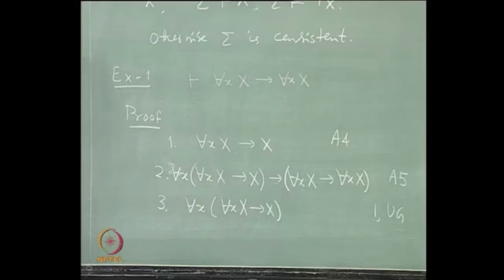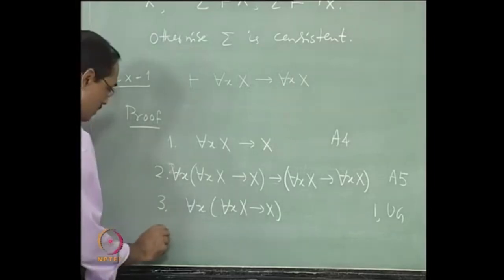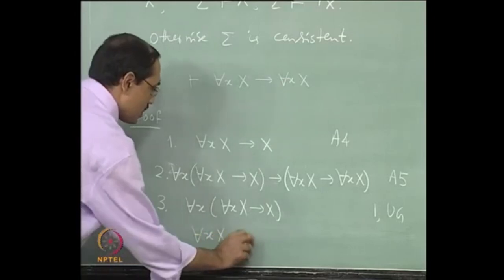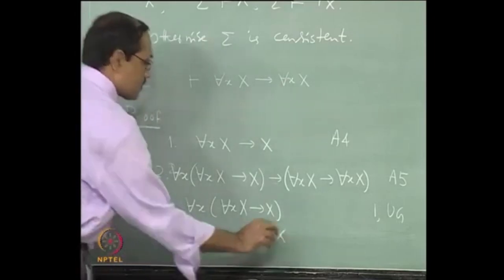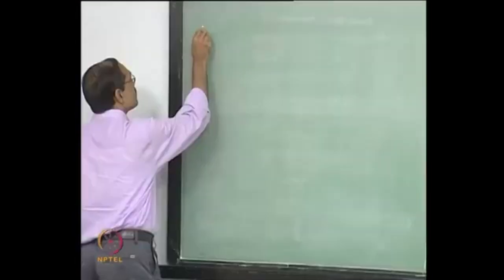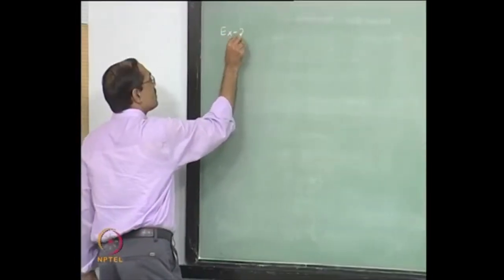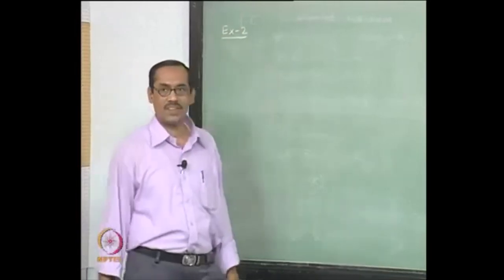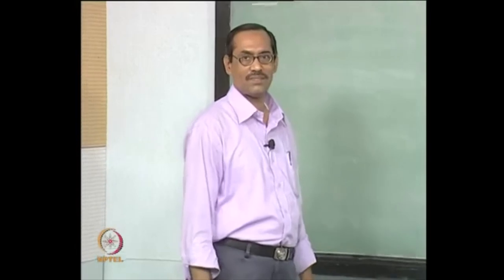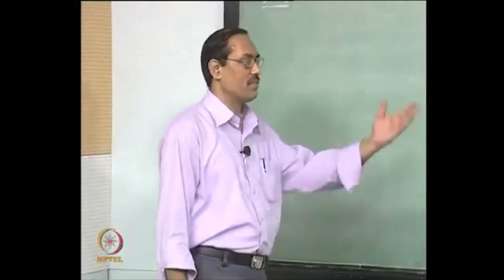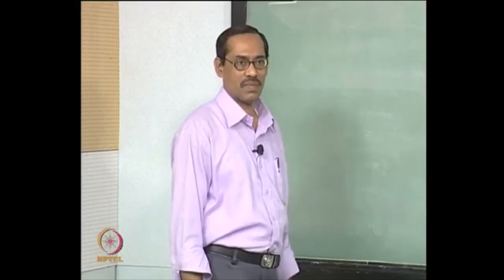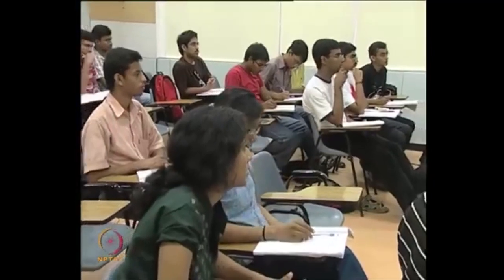Is that okay? Then, the fourth line is by modus ponens: for each x, x implies for each x, x. Let us take some more examples to see something which is not in PC. This is really coming from PC - this theorem. It is P implies P, though we have a different proof now, instead of using just the P implies P form.